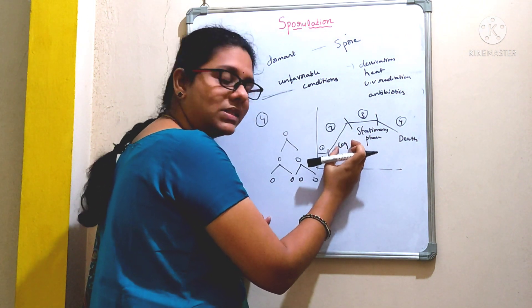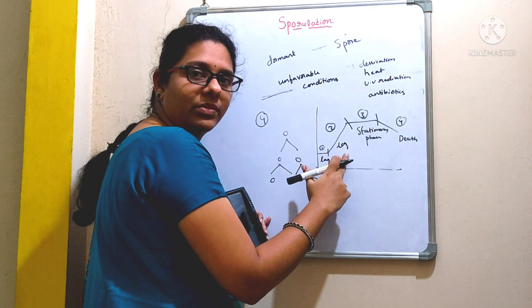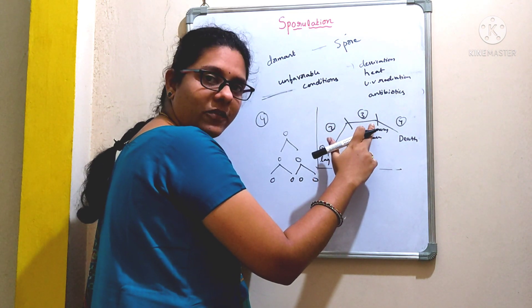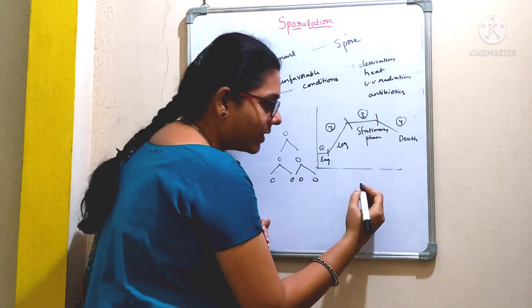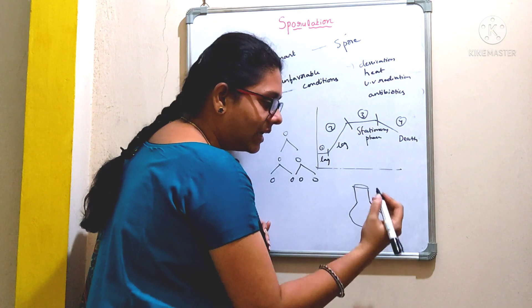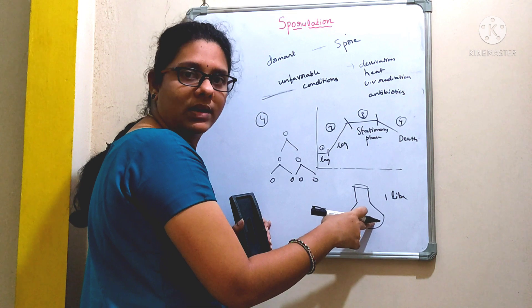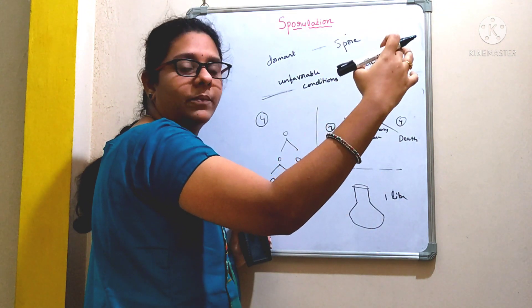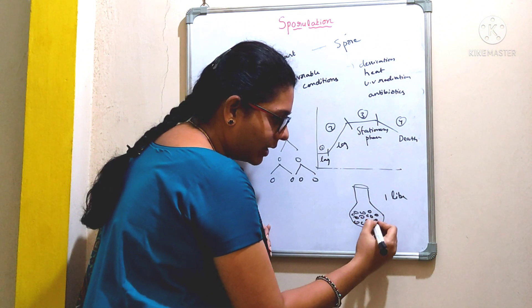When you look into the logarithmic phase, there will be an exponential increase in the cell number. But when the bacteria reaches the stationary phase, what happens is there will be a depletion of nutrients. For example, if you take a conical flask, you will prepare around one liter of media. You inoculate the organism and it undergoes division, increasing its population. This space is occupied by the growing bacteria.